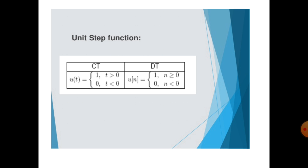Similarly, ramp function has both CT and DT versions, parabolic function also has both CT and DT, and exponential signal also has both CT and DT. The unit step function for continuous-time signal is: u(t) = 1 where t ≥ 0, and u(t) = 0 for t < 0. This is the condition for the unit step function for the continuous-time signal.